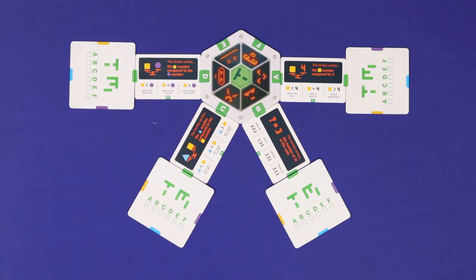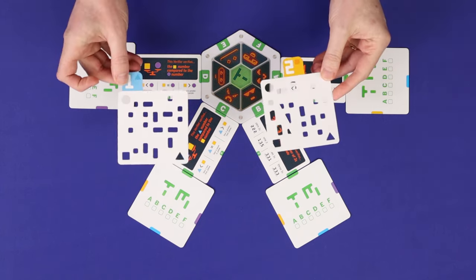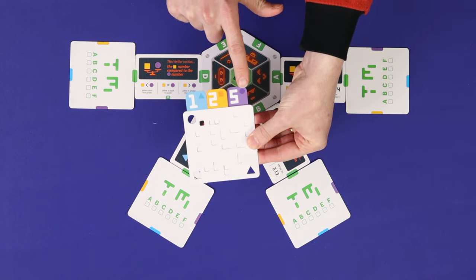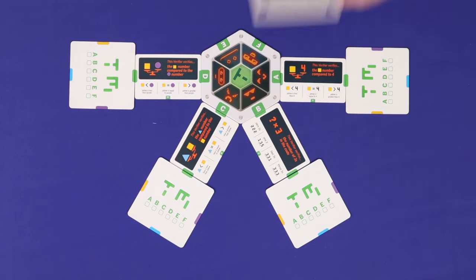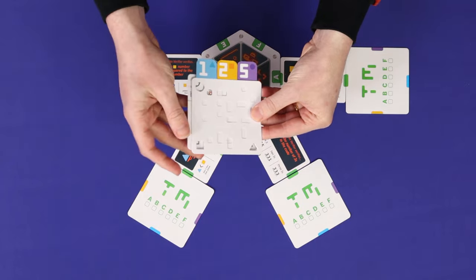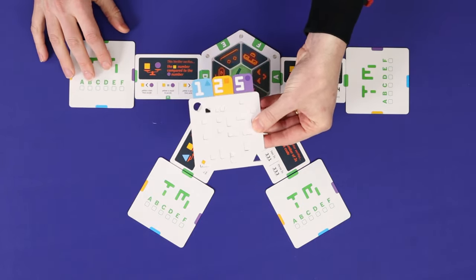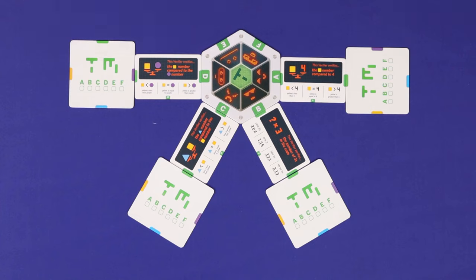Turing Machine is a logic deduction game in which players will leverage the power of punch cards to try to find a three digit combination. Players will be using the punch cards to ask questions of the game to try to learn things about their codes. And the fastest player to guess the true combination will win the game.